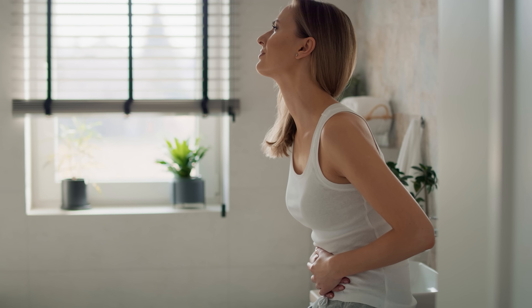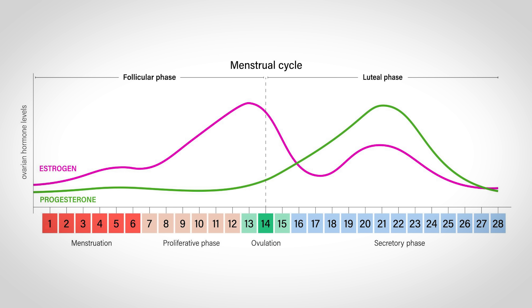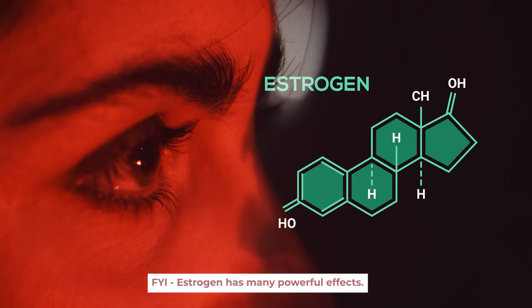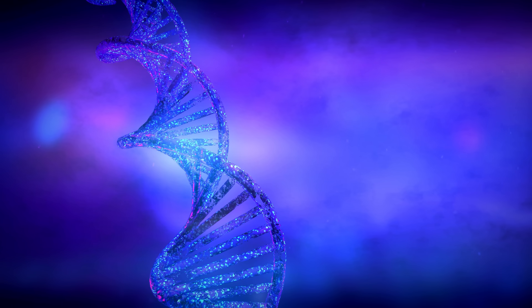If someone is experiencing menstrual cramping, it means that during the previous cycle pregnancy did not occur. This chart represents the whole 28-day cycle: the first three to five days are when menstrual cramping occurs and the endometrium is sloughing off. Then estrogen levels start to build up to about day 14, which represents ovulation — when the egg is released and pregnancy can potentially occur. Estrogen also influences sex drive or libido, so it may increase a female's sex drive prior to when she could become pregnant.